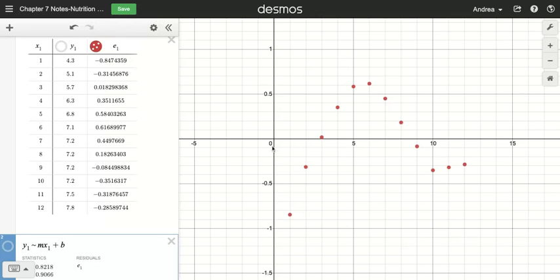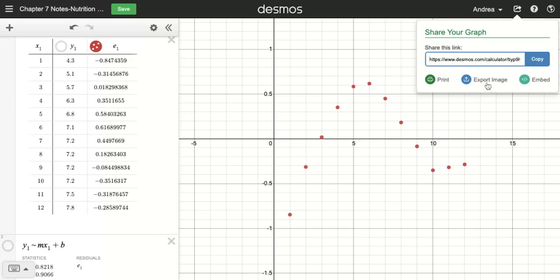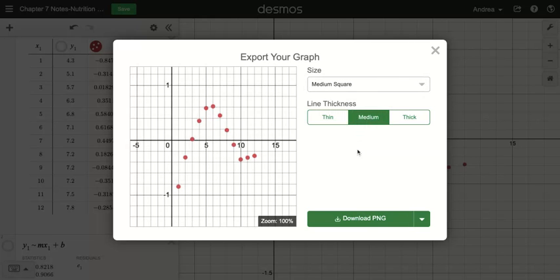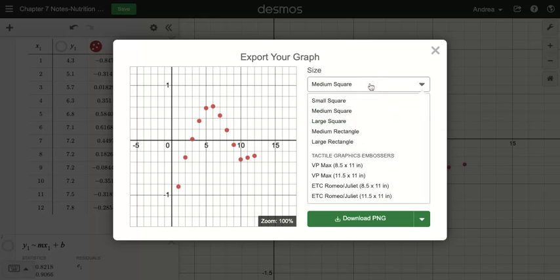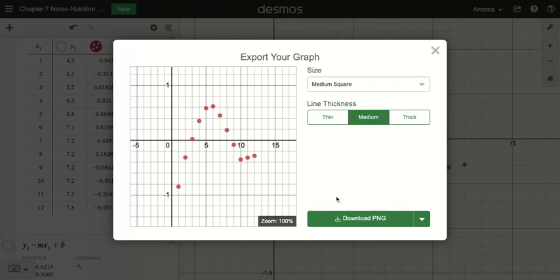Now, if you want to take your image and you want to export it to be able to show your work, you can click up here. You can click on share graph, and you can hit export image, and it will go ahead and export your image. You can decide how thick you want the lines, you can decide how big you want the squares, so forth. And so you can go ahead and just hit download, and it will download your image for you.